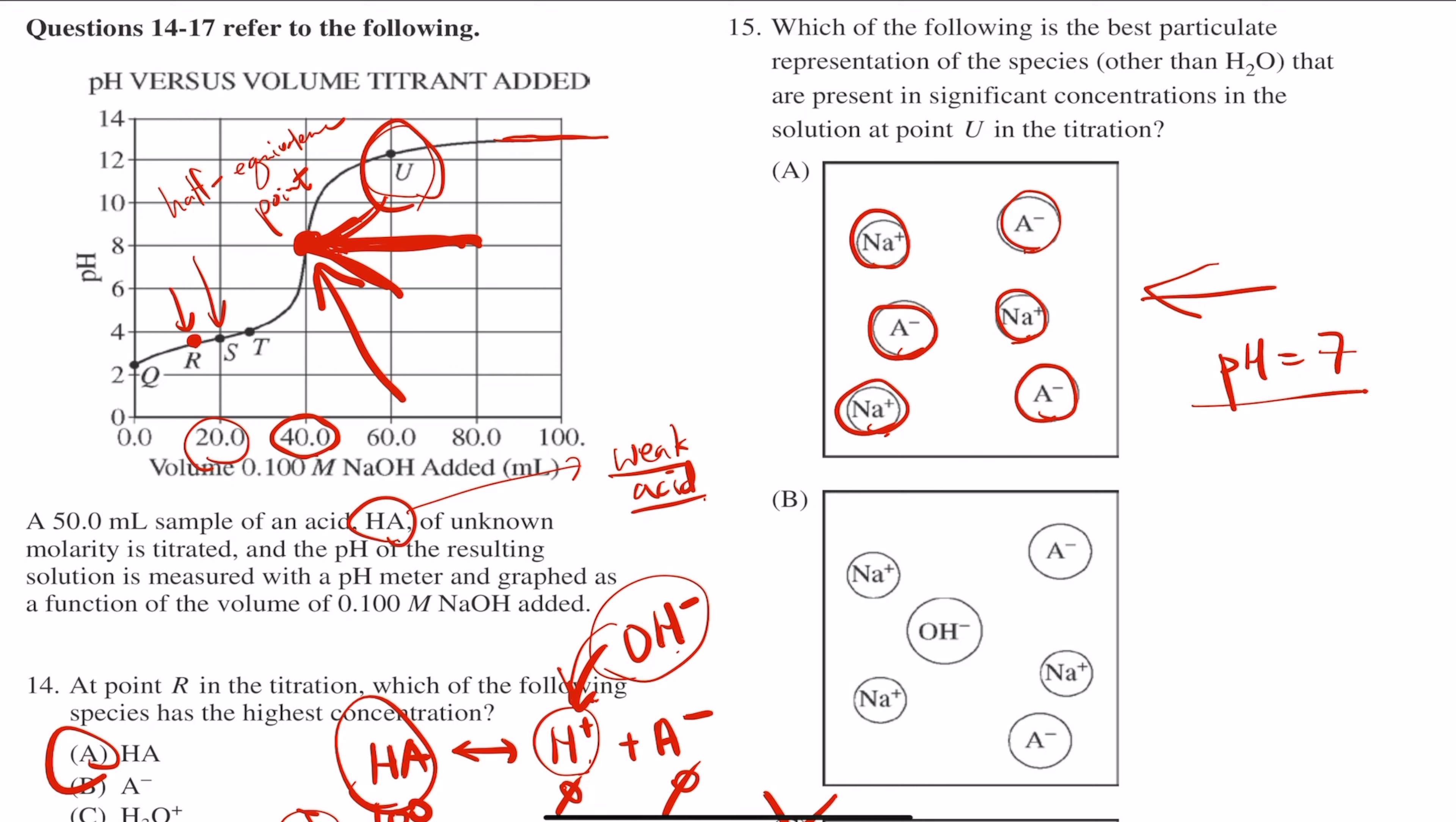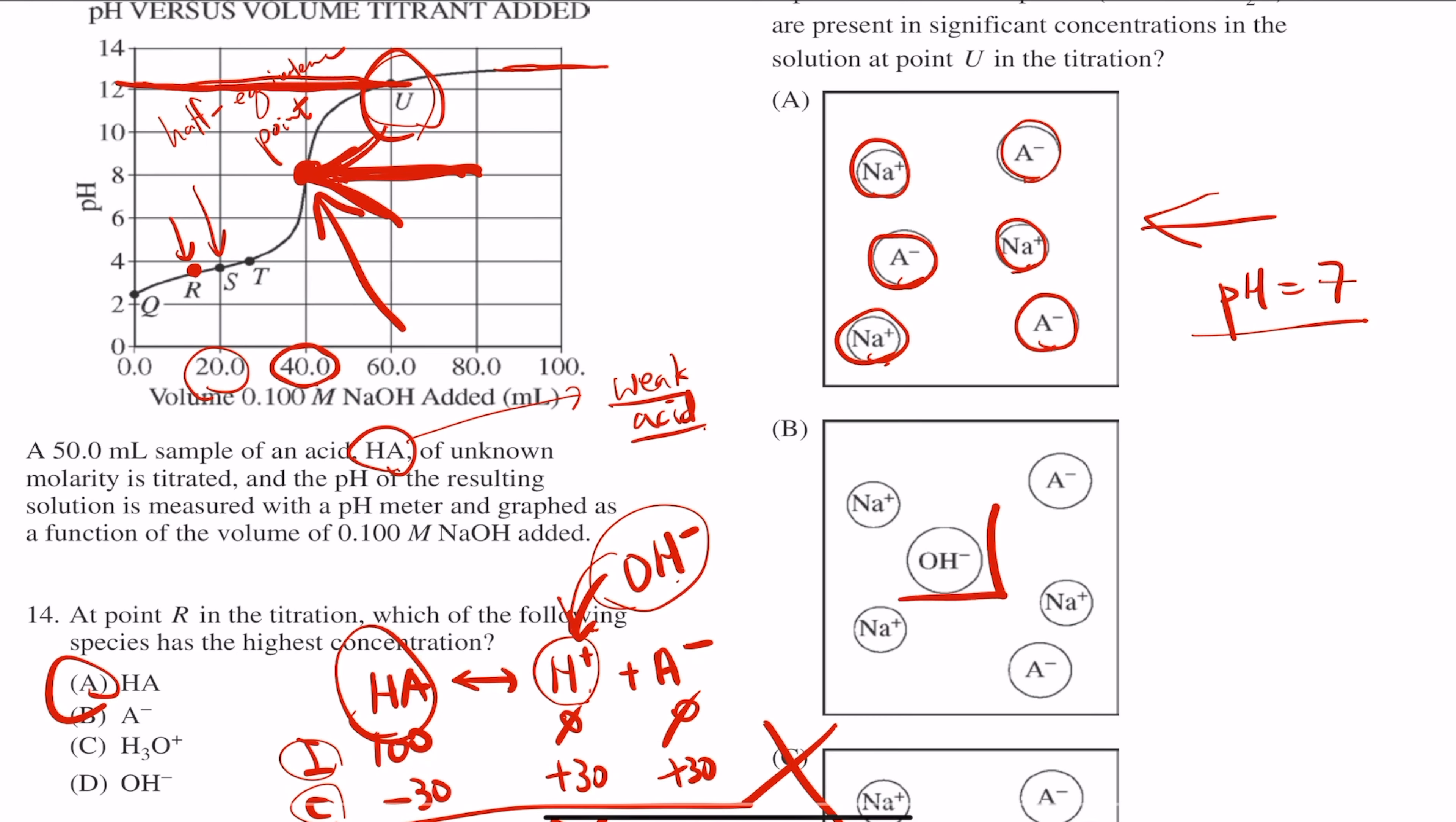At point U, look at the pH. That's like above 12. So we should be looking at something basic, meaning we need some base to be present. Look at choice B. We have the hydroxide, which will make it basic. And that's why it's answer choice B.